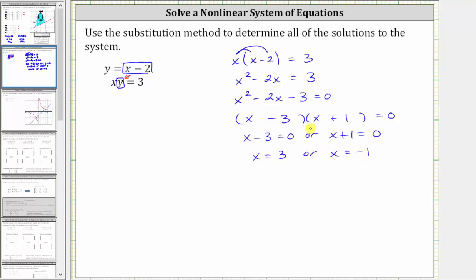But remember, each solution consists of an x and a y value or an ordered pair. And here we found two values of x. So one ordered pair solution will have an x value of negative one. We still have to find the corresponding y value.